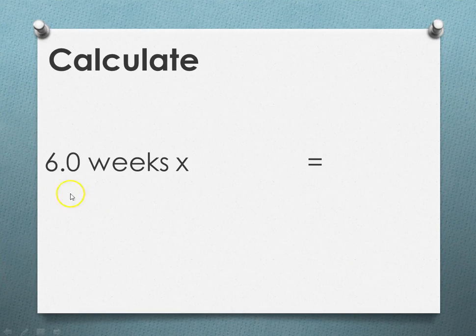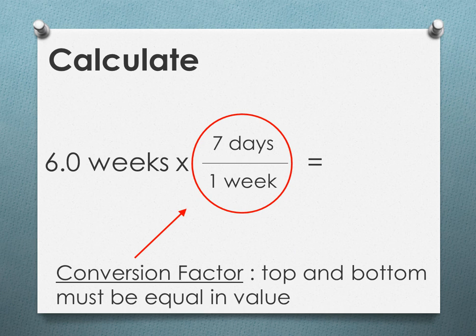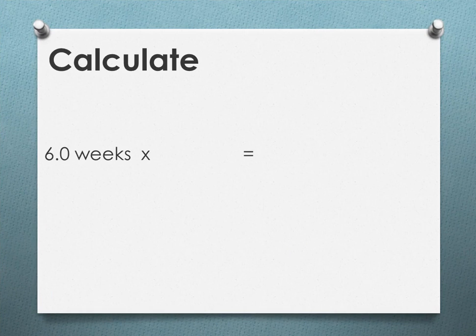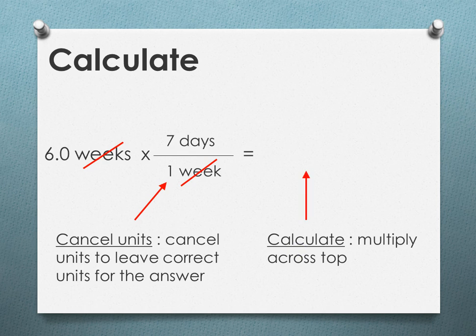Now we're going to calculate. So we're going to start with the given. We're going to multiply by our conversion fact: seven days is equal to one week. So again, this is our conversion fact, and the top and bottom must be equal in value. Now we're ready to calculate, so let's put our conversion fact back in. We have to cancel units first to make sure that we're left with the correct units. So in this case, weeks divided by weeks cancels out. We're left with days. Now we can calculate by multiplying across the top, and we end up with 42 days, which has two significant digits, matching the two sig figs that were in our given.